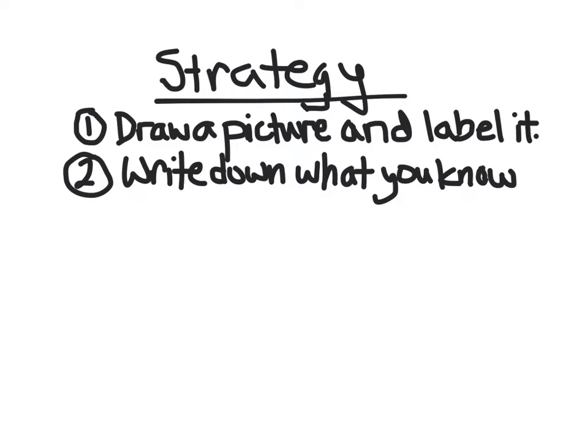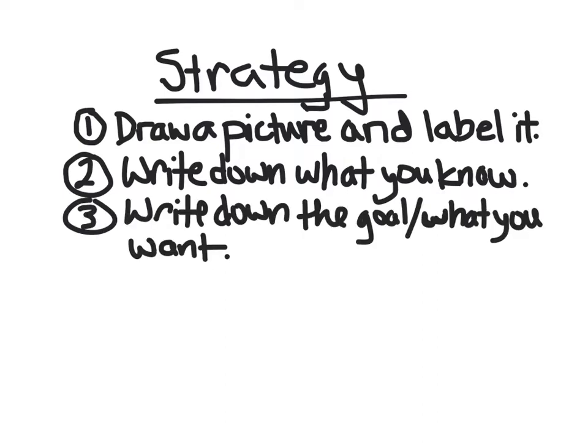Then you want to write down what you know, so the given information. Maybe you know one of the rates and you want to figure out the other. We want to start with what we know. Next you want to write down the goal or what you want in the problem. That will give you a direction on the problem, and then we can figure out how to get there using what we know.